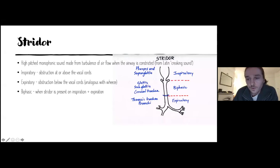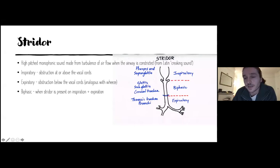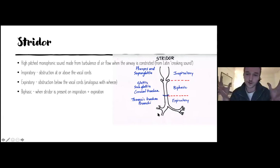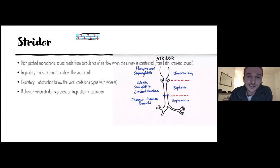Another way to divide stridor is by the location of the constriction. In the pharynx and supraglottis — above the vocal cords — it's usually an inspiratory stridor, because as you breathe air in, the first structure you encounter is that part: through the mouth, into the upper airway, through the oropharynx and nasopharynx, down to the vocal cords. Expiratory stridor is lower down — when your lungs are expanded and you breathe out, the first thing you're squeezing against is lower down.